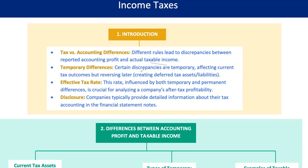Here's where it gets interesting. These variations can either be temporary, leading to deferred tax assets and liabilities, or permanent, which won't ever change. Think of it like this: temporary differences are like a bend in the road — it'll straighten out eventually. But permanent differences? They're like a dead end. They're here to stay.